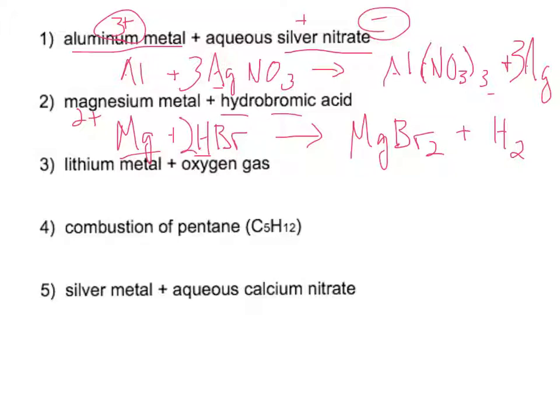Next one is lithium metal, Li, plus oxygen gas, O2. In this case, it's a synthesis reaction, and we're going to end up with Li2O. And that's because lithium metal, when it forms ions, is a positive one, and the oxygen, as we mentioned before, is a two negative. We need to balance this. So we need to put a two in front of that and a four in front of that. And now that's balanced.